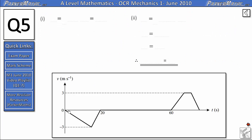So if we want to work out the area of this triangle here, we can use half base times height. So the displacement is given by half multiplied by the base, which is 20, multiplied by the height, which is 3. A half of 20 is 10, multiplied by 3 is 30 metres.